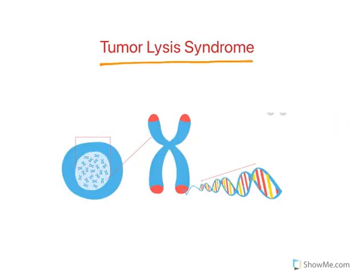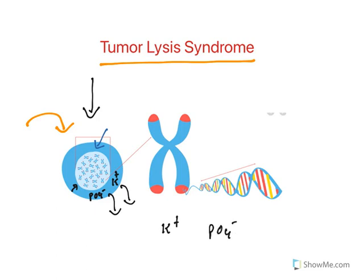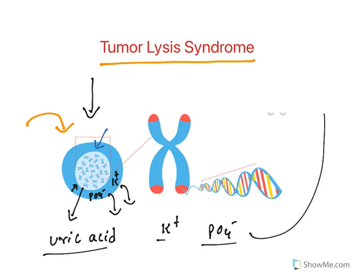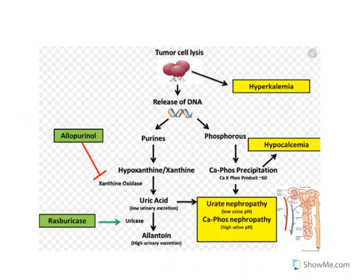There is one more major effect called tumor lysis syndrome. A normal cell contains DNA, potassium, and phosphates inside. When anti-cancer drugs break down DNA and kill the cell, all these contents — potassium, phosphate, and from the DNA a major metabolite uric acid — are released into the blood, causing elevated levels of these components. This condition is known as tumor lysis syndrome.